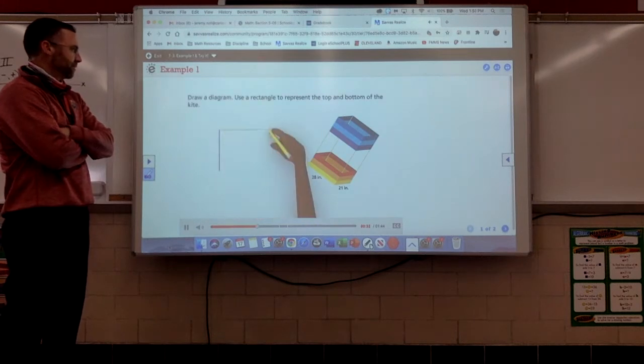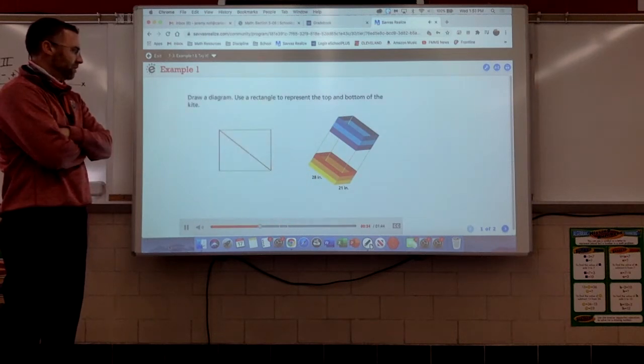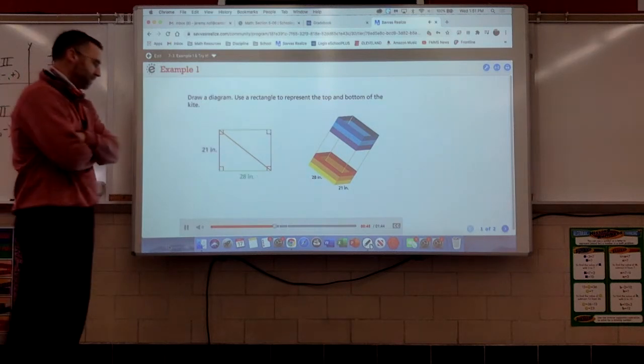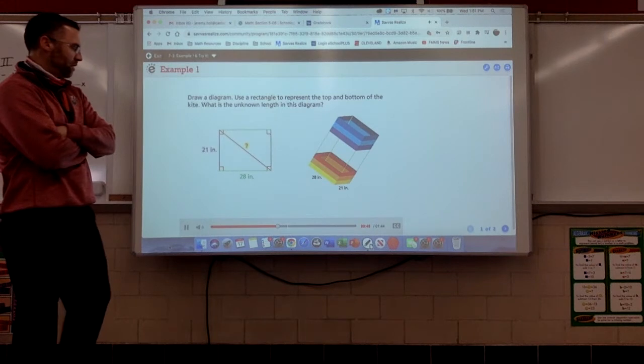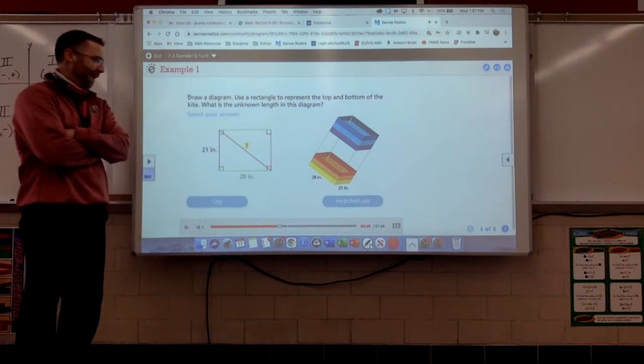Let's begin by drawing a diagram. Use a rectangle to represent the top and bottom of the kite. All four corners are right angles. The side lengths are 28 inches long and 21 inches wide. What is the unknown length in this diagram?